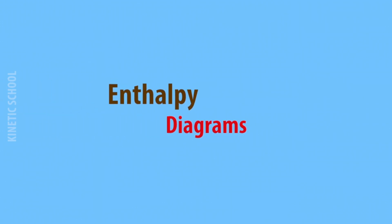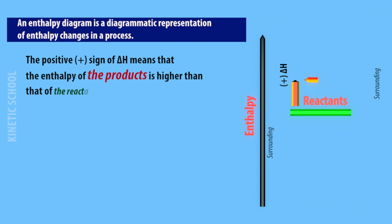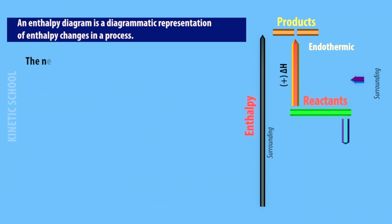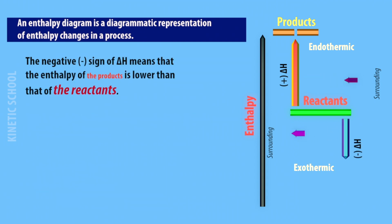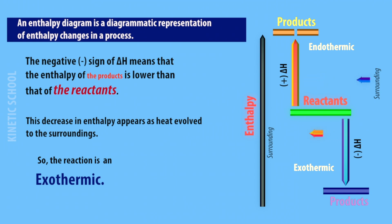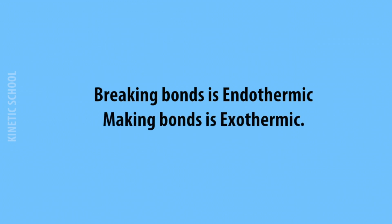An enthalpy diagram is a diagrammatic representation of enthalpy in a process. A positive delta H means the enthalpy of the products is higher than that of the reactants — this increase appears as heat absorbed from the surroundings, so the reaction is endothermic. A negative delta H means the enthalpy of the products is lower than that of the reactants — this decrease appears as heat evolved to the surroundings, so the reaction is exothermic. In summary, breaking bonds is endothermic and making bonds is exothermic.